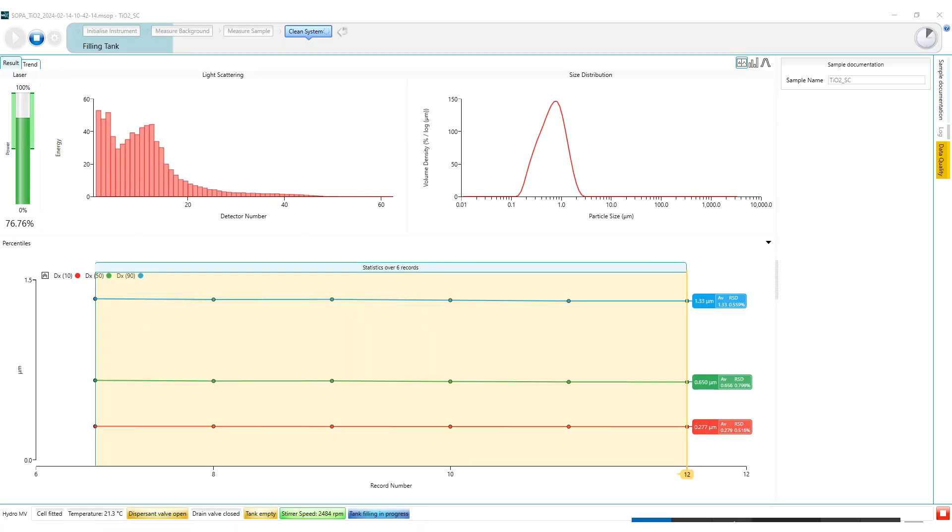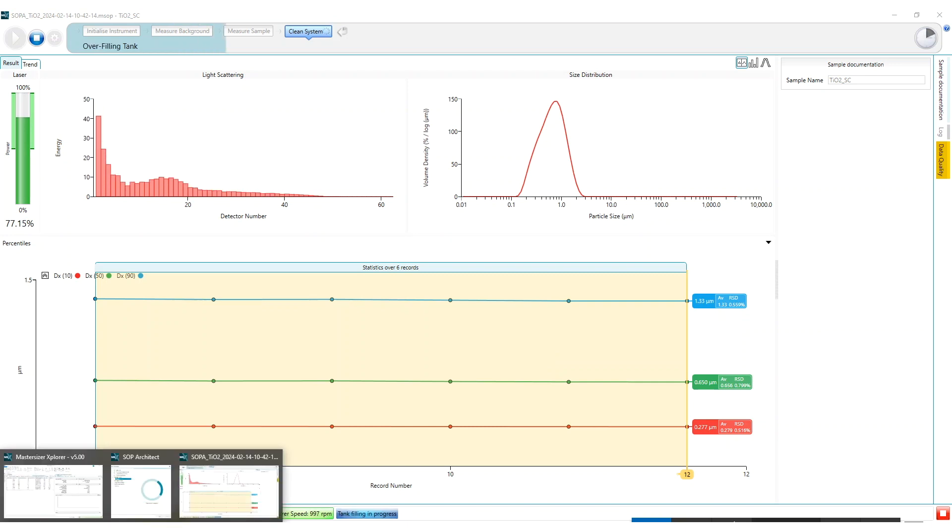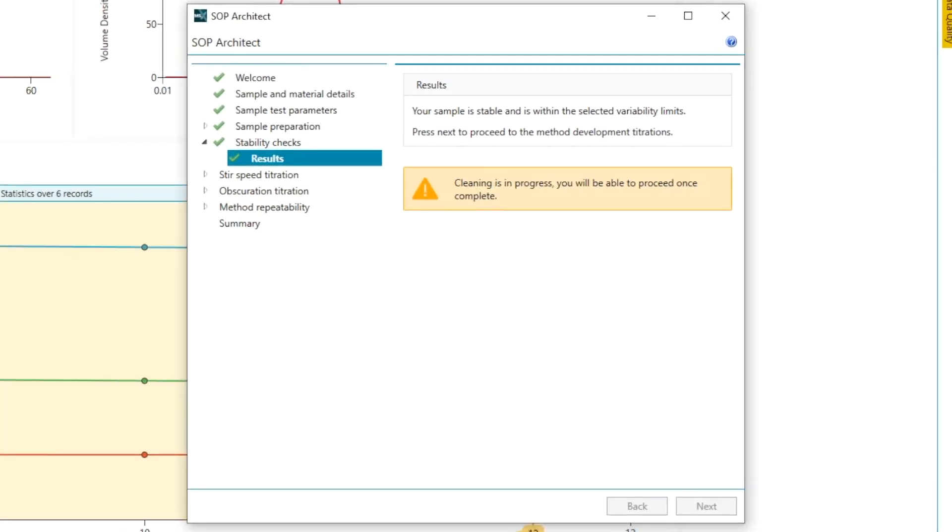So now that we've finished our six measurements we can see that we have a very stable dispersion and we can now consult the SOP Architect window to see how we proceed. We can see that the SOP Architect software feature has now advised us that we've passed the stability check and can proceed.